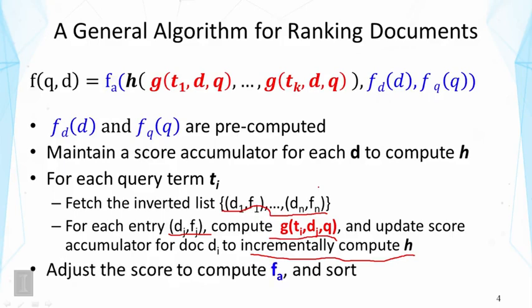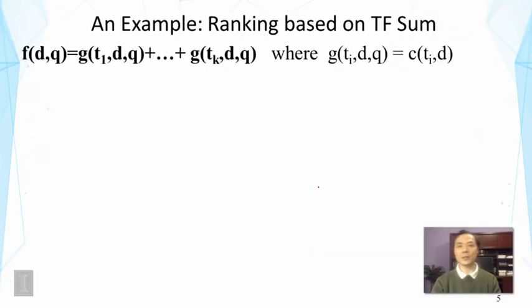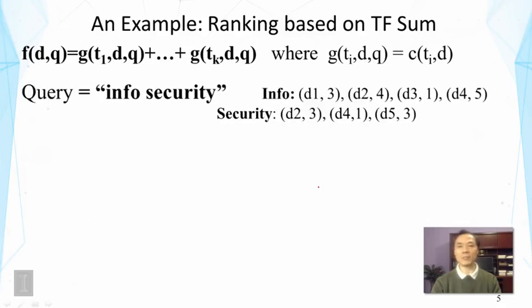This is basically a general way to allow us to compute all functions of this form by using inverted index. Note that we don't have to touch any document that didn't match any query term. This is why it's fast. We only need to process the documents that match at least one query term. In the end, we're going to adjust the score to compute this function f_a, and then we can sort. Let's take a look at a specific example. In this case, let's assume the scoring function is very simple—it just takes the sum of tf, the raw tf, the count of a term in the document. Let's take a look at the specific example where the query is information security.